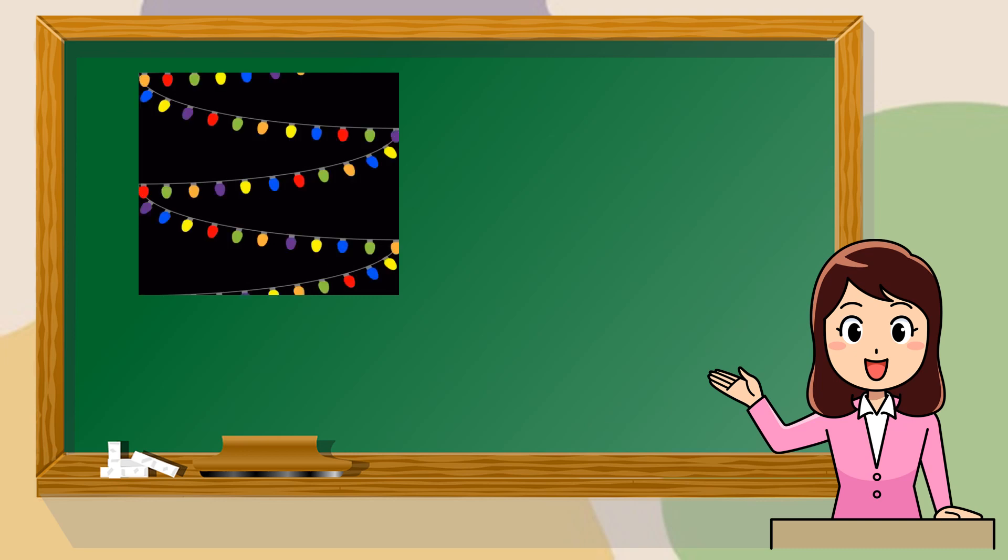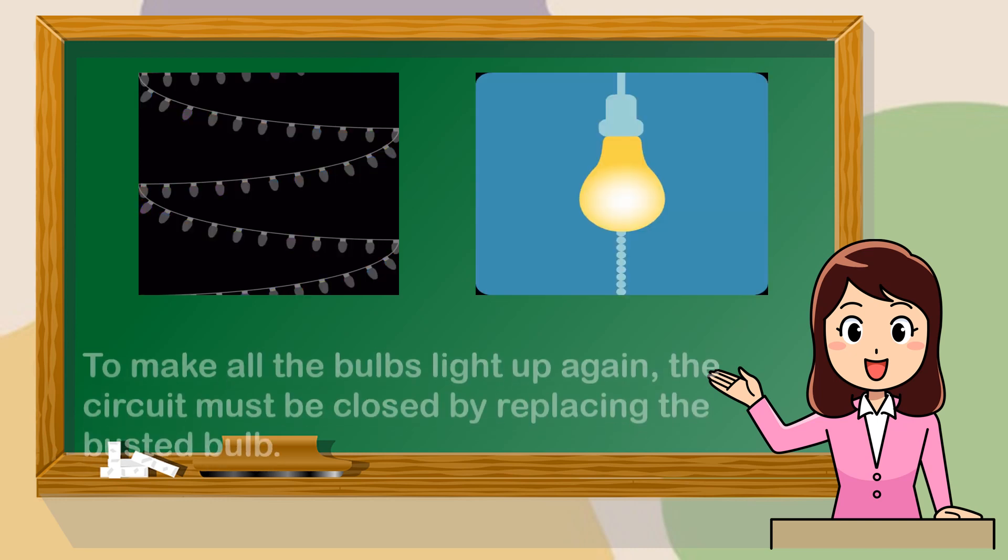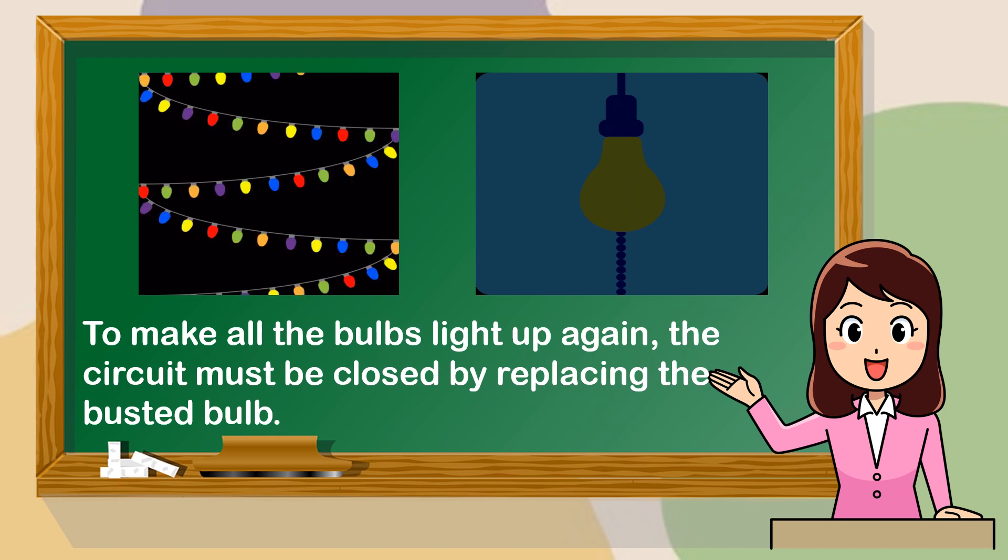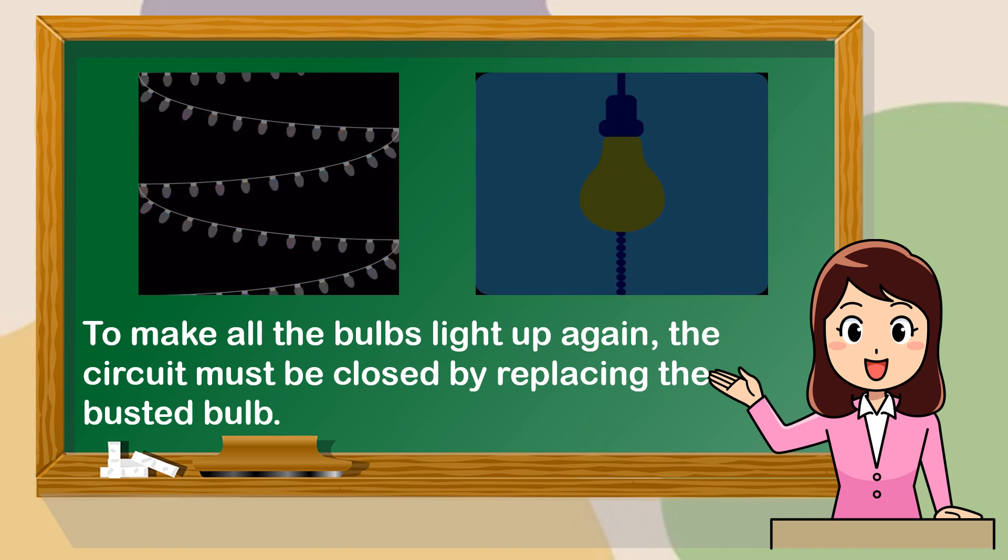Christmas lights and light bulbs in your house have different kinds of circuits. To make all the bulbs light up again, the circuit must be closed by replacing the busted bulb.